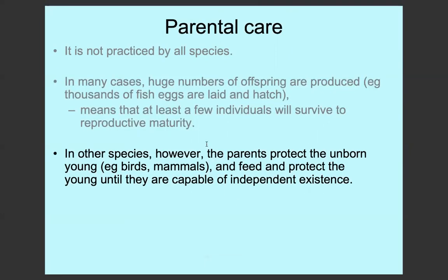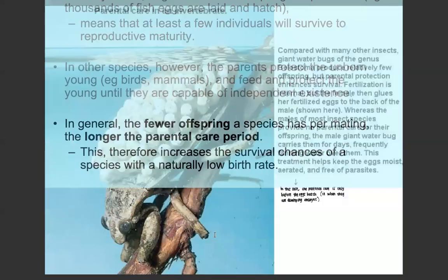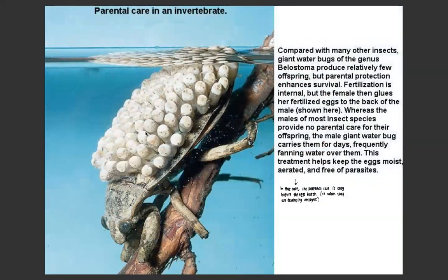Birds, mammals, and humans protect the unborn young while they're unborn and feed and protect them until they're capable of living on their own. In general, the fewer offspring a species has per mating, the longer the parental care period — this increases the survival chances of a species with a naturally low birth rate, such as mammals. Giant water bugs produce relatively few offspring compared with other insects but have higher parental care because of internal fertilisation. The eggs, once fertilised, are glued to the back of the male, who carries them, fans water over them, and protects them, meaning parental care is higher and these eggs are more likely to survive.